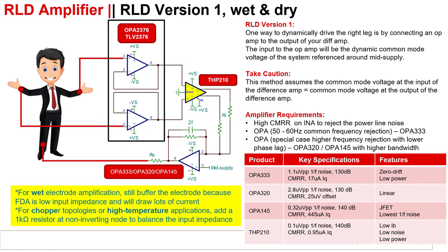One of the challenges associated with biopotential measurements is rejecting the common mode voltages to which the human body, electrodes, and cables are exposed. That is why having an instrumentation amplifier with high CMRR is important. One way of reducing external common mode interference is by actively driving the body back with a known voltage so that the body is not electrically floating anymore. This voltage is called right leg drive, or RLD.